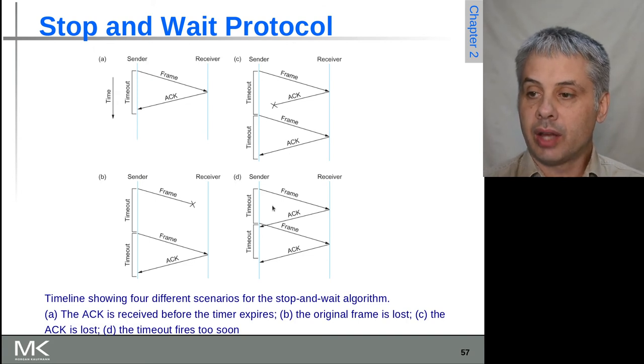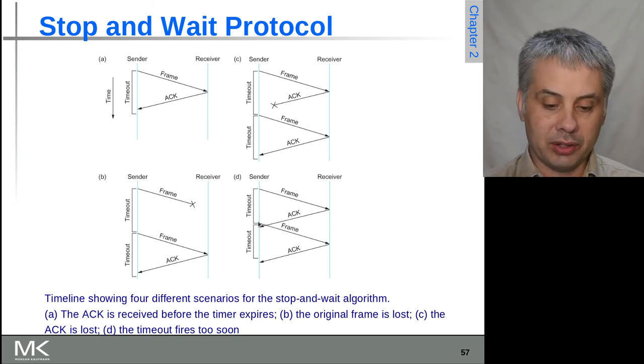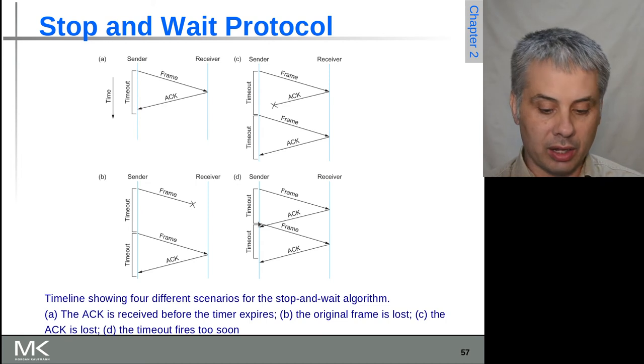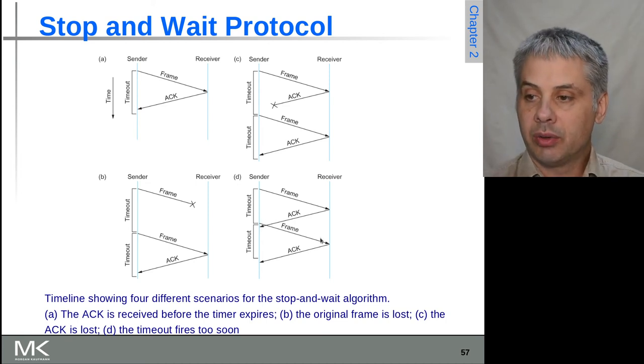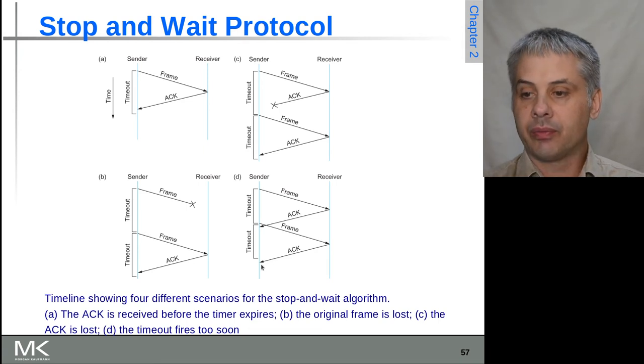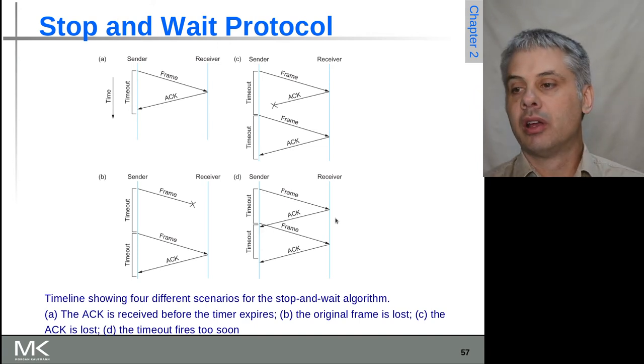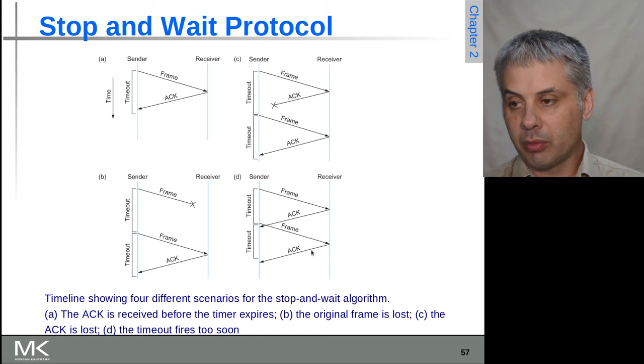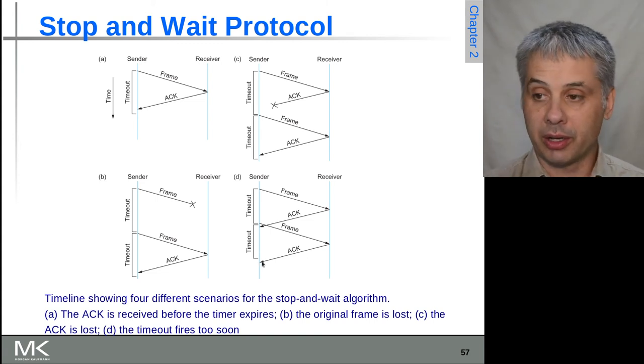The other option that can happen is you send the frame and the acknowledgement actually gets sent but takes longer than the timeout. Maybe there's queuing delays or something else going on. Then again, the sender will send a duplicate and there'll be a duplicate ACK that will come back. Here you probably want to increase the timeout to avoid this happening, but again the receiver needs to be able to handle the duplicate frames and the sender needs to be able to handle the duplicate ACK.